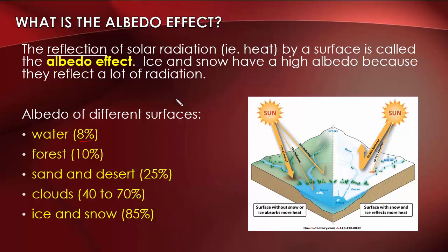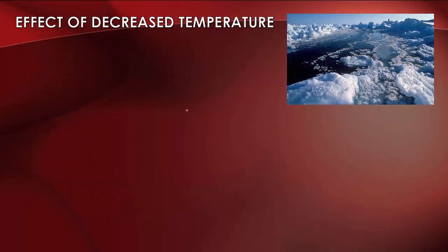Having ice and snow is very important to the planet. Now let's have a look at what happens when there is a decrease in temperature on the Earth, and how that's going to affect the ice and snow and the albedo, because there is something called a feedback loop that we're going to have to consider.